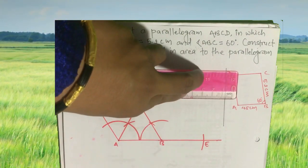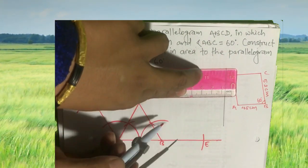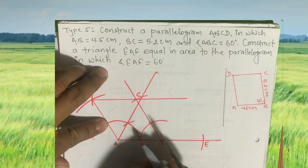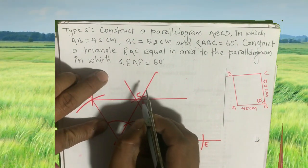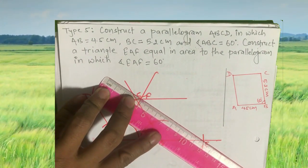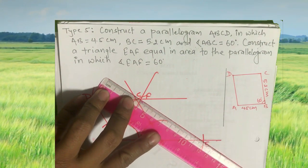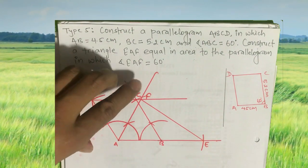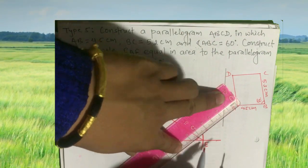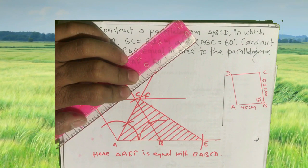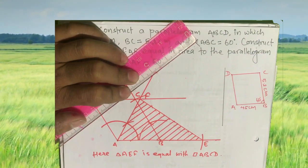Extend the parallel lines and intersect them to find the required points. Cut the parallel lines and intersect to get point E. Triangle AEF is equal to parallelogram ABCD in area. The construction is now complete. Thank you for watching.